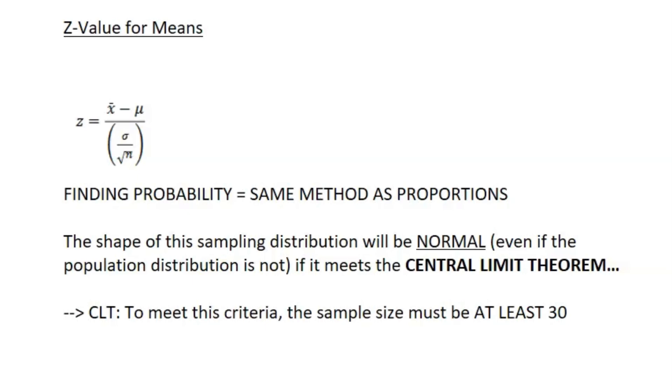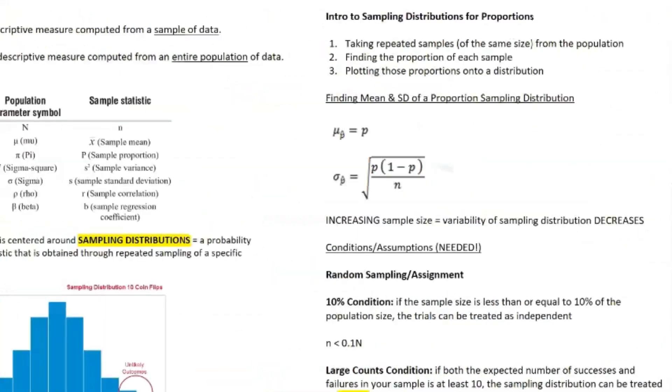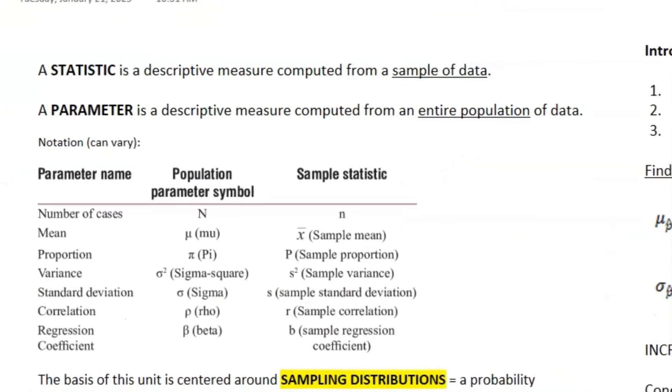Another thing we want to introduce is the central limit theorem. Your sampling distribution is going to be approximately normal, even if the population distribution isn't, if it meets the central limit theorem. What is the central limit theorem? Basically, your sample size just has to be at least 30. That's pretty much the entirety of Unit 5.